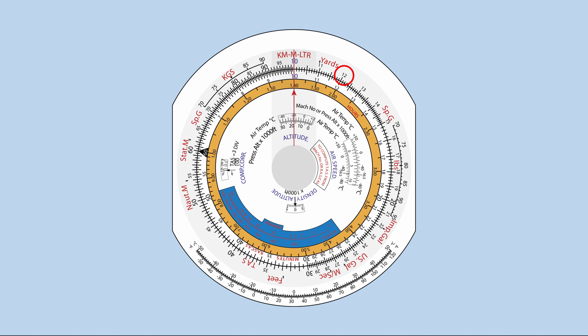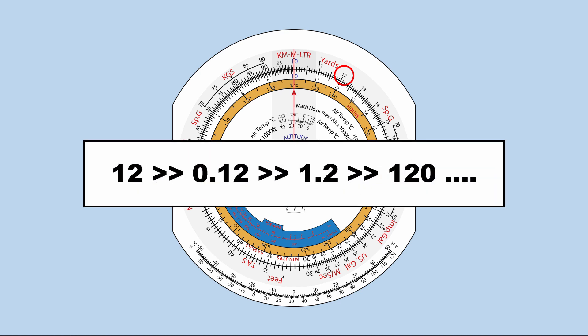For instance, the number 12 is also used to represent 0.12, 1.2, 120, etc. We put the decimal point in after we carry out the navigation computer operation.